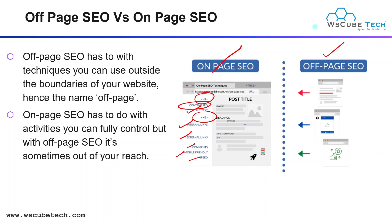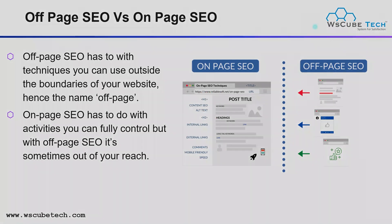In the case of on-page SEO, the activities are something you can fully control. But in the case of off-page SEO, it's something out of your reach. For example, if you want to improve your title, you can — that's up to you. But if you create your website link on another website, you cannot guarantee that 10 people will come to that website and click on that particular link. You have to create many backlinks, and the traffic from them is not immediate — you have to wait a long time. It's a long-term activity that is not fully in your control.